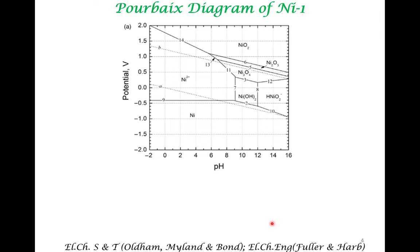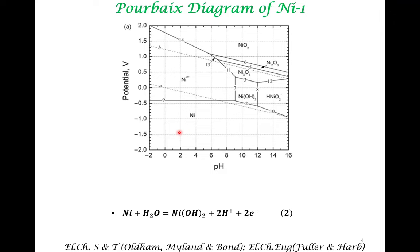We will look at a particular Pourbaix diagram — that of nickel. This may appear complex because a lot of information is presented in a single diagram. But if you have looked at a variety of phase diagrams, say a simple water phase diagram or, in the context of materials science, an iron-carbon phase diagram, you may anticipate that a phase diagram will contain lots of information because the structure of materials under different conditions is very different. Here too, we are attempting to describe such information. Let's go through this slowly and gradually to understand the information presented.